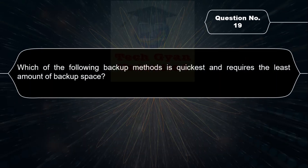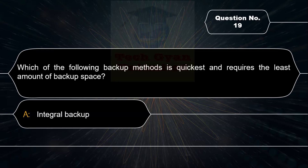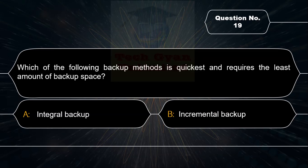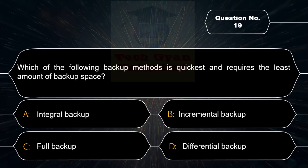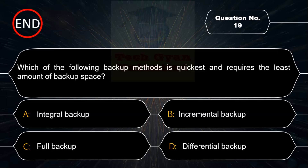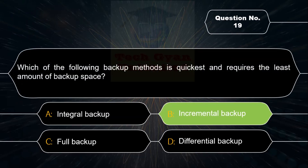Which of the following backup methods is quickest and requires the least amount of backup space? Option A: Integral Backup, Option B: Incremental Backup, Option C: Full Backup, Option D: Differential Backup. Correct answer is Option B — Incremental Backup is the quickest and requires the least amount of backup space.